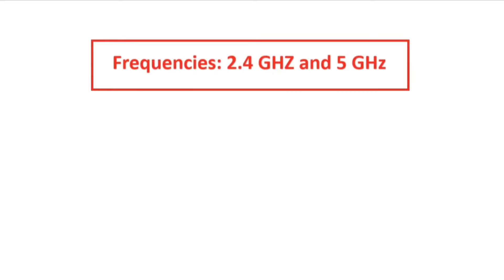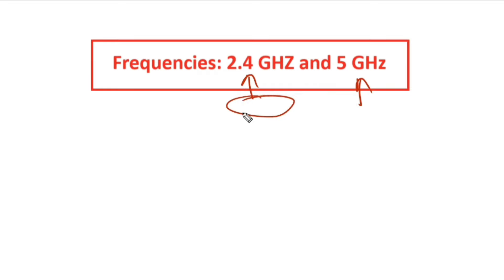We will talk about the channels, we will talk about the bands, and we will talk about the frequencies. We have two main frequencies for wireless communication — 2.4 GHz and 5 GHz — and many more as well, but for now we are talking about these two only. In the next video, we will see the channels under 2.4 GHz and channels under 5 GHz, and what are the non-overlapping channels under each. Without wasting our time, let's begin.